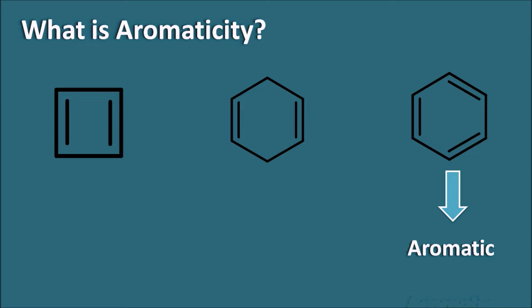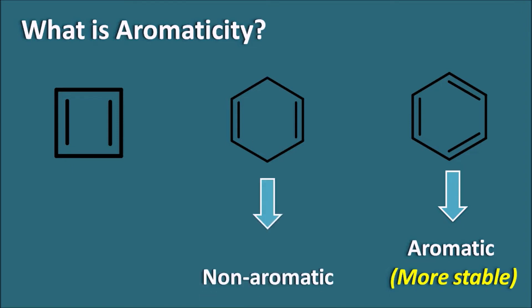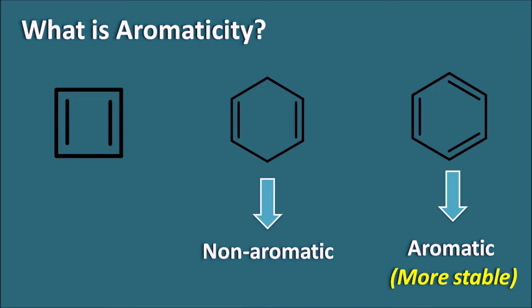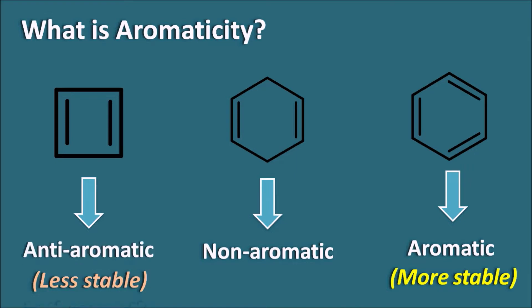Benzene has three pi bonds and it is aromatic — it is a highly stable compound. The second structure is not aromatic because it does not have double bonds arranged in a conjugated way. In the case of the first compound, the double bonds are conjugated, but interestingly this compound is very less stable.